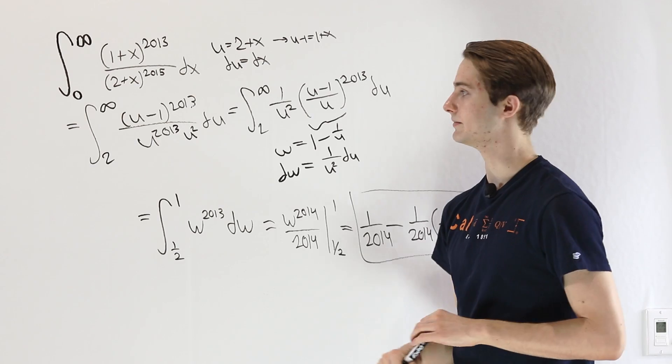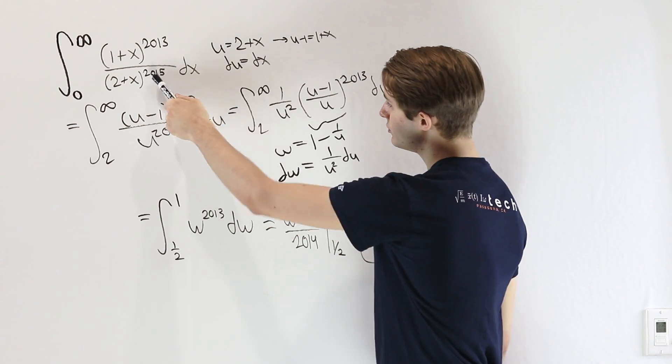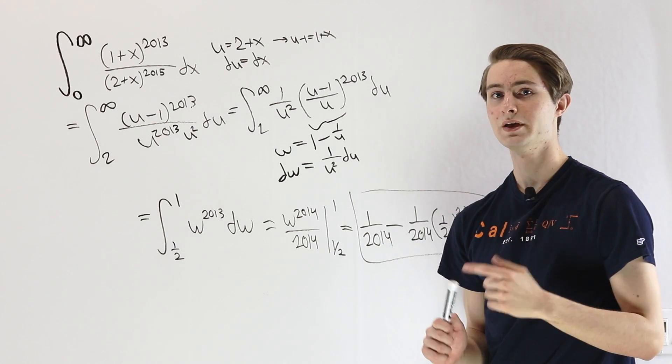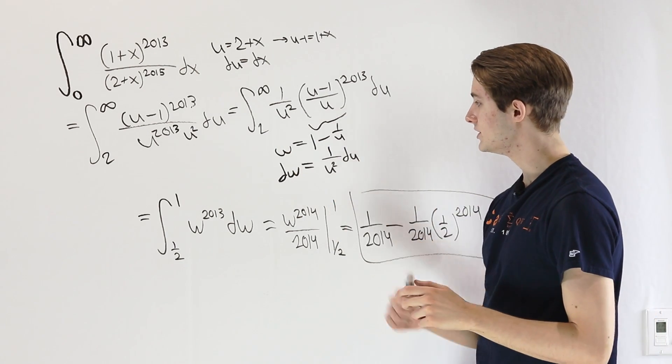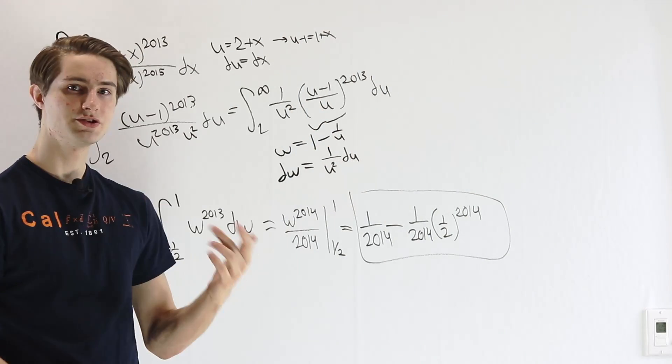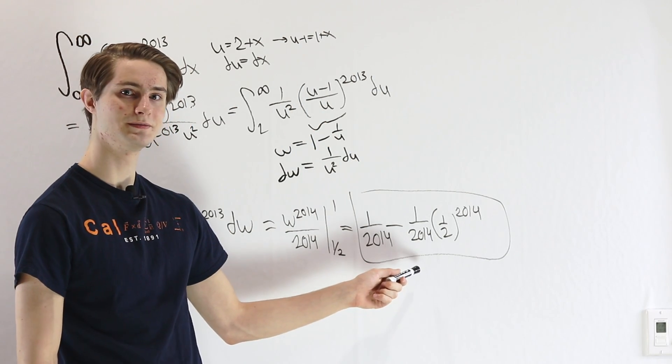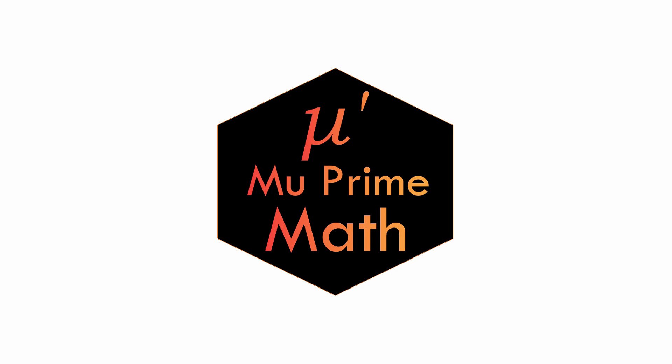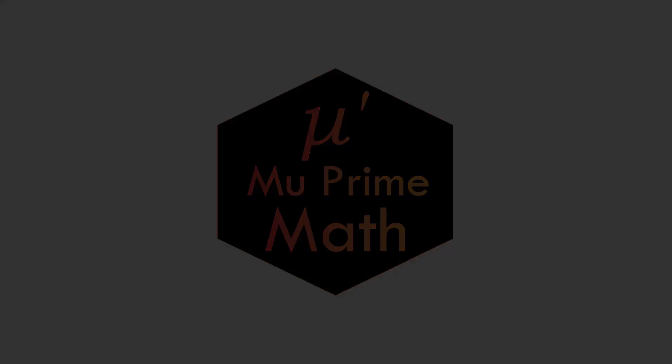And in that case, we want to bring everything under the same power. So we brought the u^2 out of the denominator so that everything could be raised to the power of 2013. And we were lucky enough that that 1/u^2 became our dw that we could use in our substitution. And just a few more steps got us to our final answer. We'll see you next time.